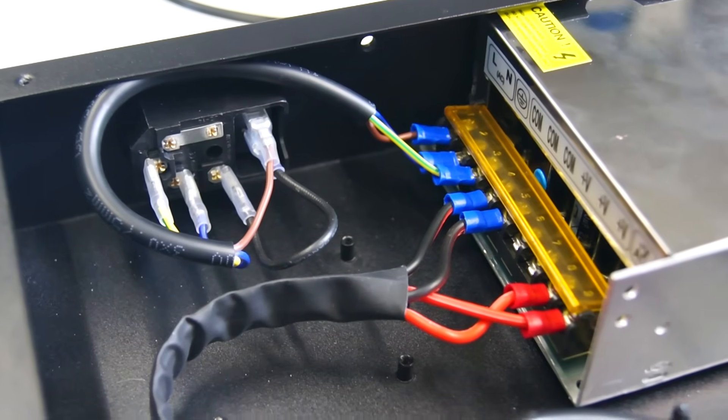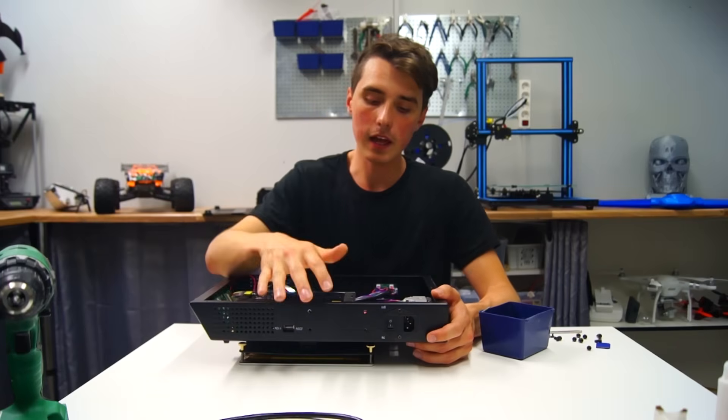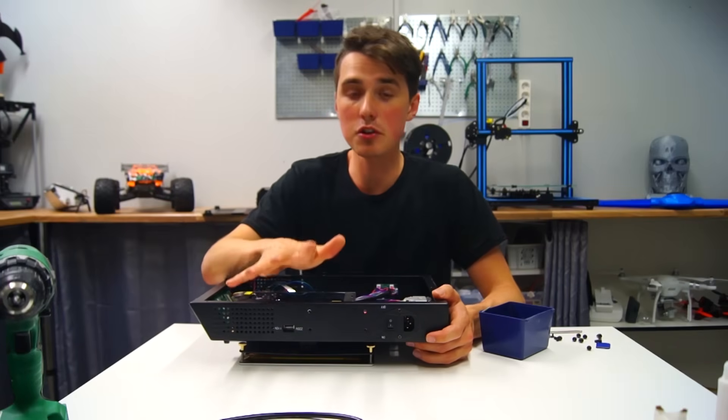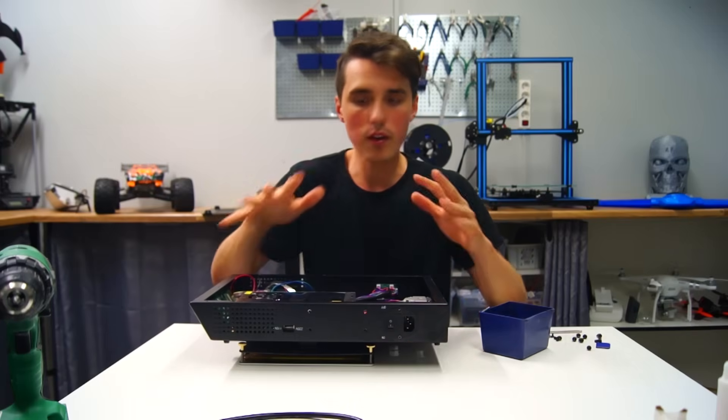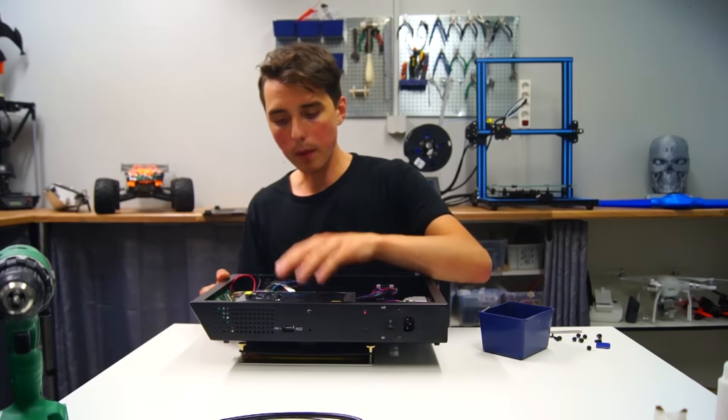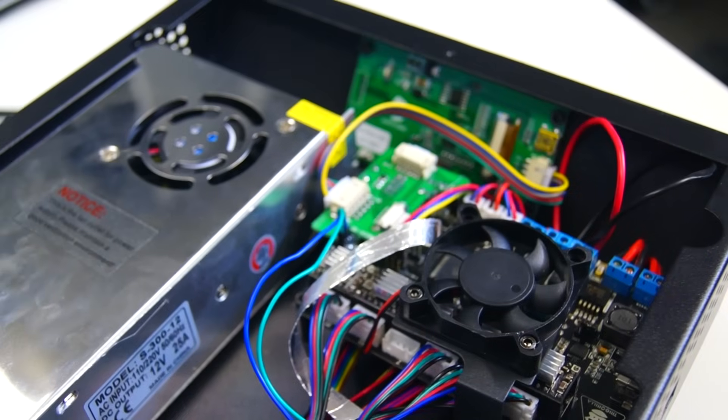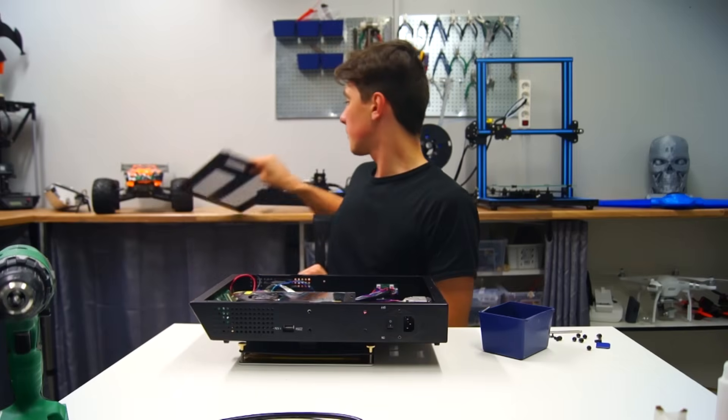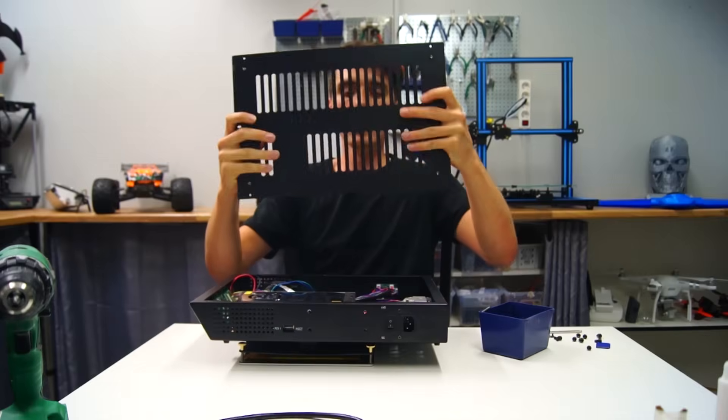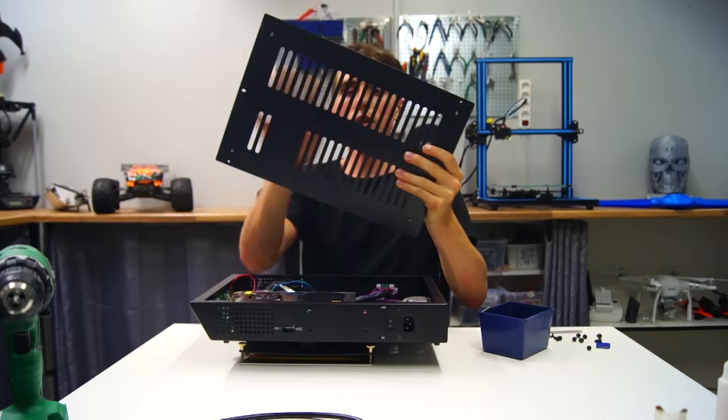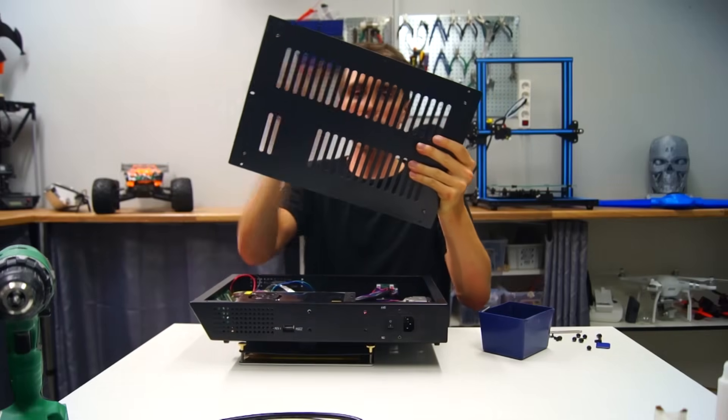It has crimp connectors, which I've told you in a previous video, that it's basically essential to have a safe 3D printer. Both the power supply and the motherboard have cooling fans, you also have the bottom part of the container with these vents.